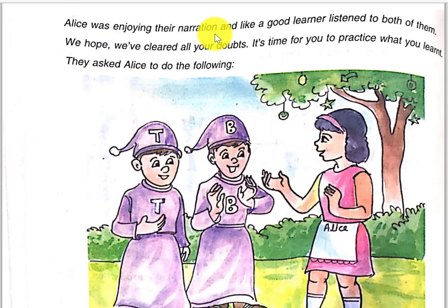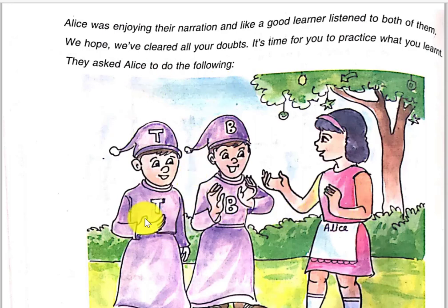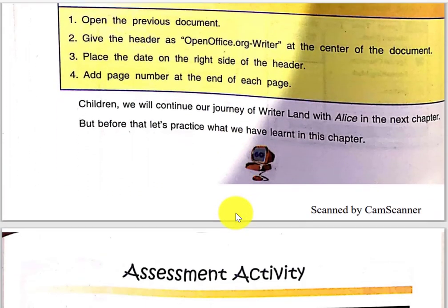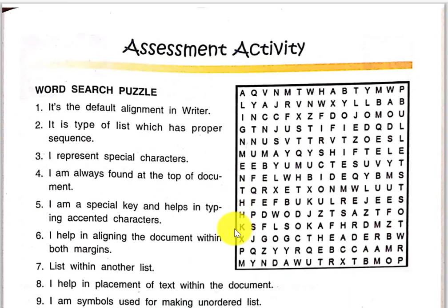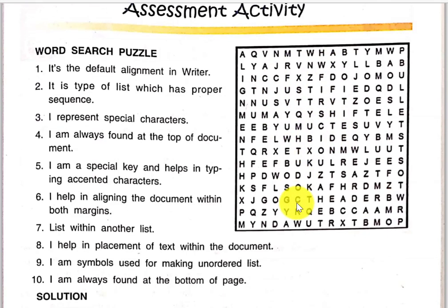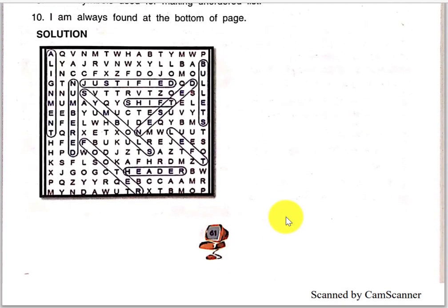Alice was enjoying their narration and, like a good learner, listening to both of them. We hope we have cleared all your doubts. It's time for you to practice what you learned. They asked Alice to do the following activities. This is the assessment activity — read the questions, type the list which has the proper sequence. You can find it in your book and mark your answers. Thank you.